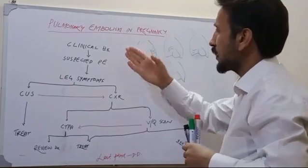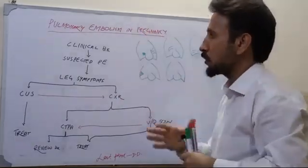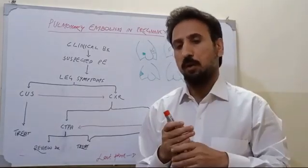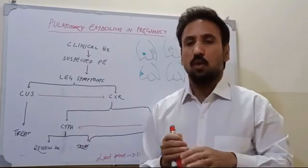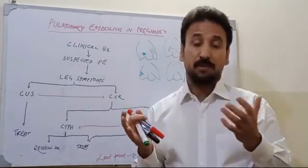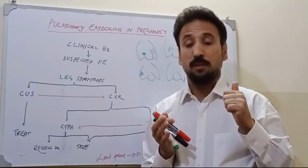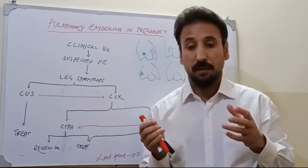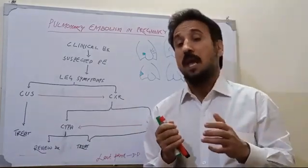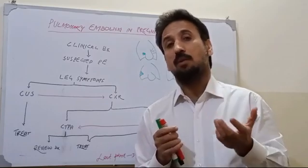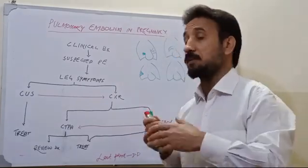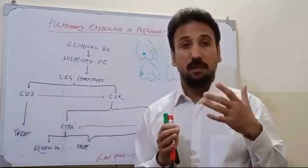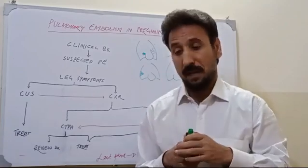Pulmonary embolism in pregnancy can be easily diagnosed if we first focus on the clinical history, which is very important. For example, if a patient has no hypertension, no diabetes, no ischemic heart disease, no valvular or rheumatic heart disease, and no concomitant respiratory conditions like COPD or bronchial asthma that can cause exacerbation in pregnancy.